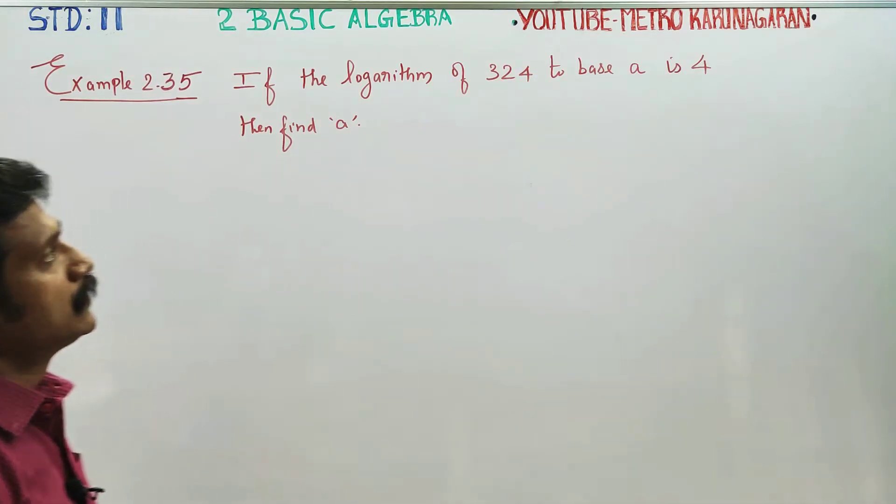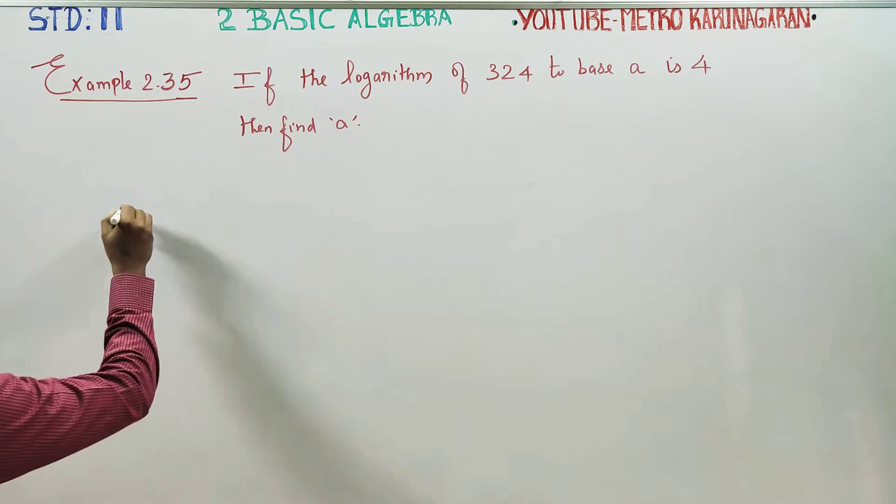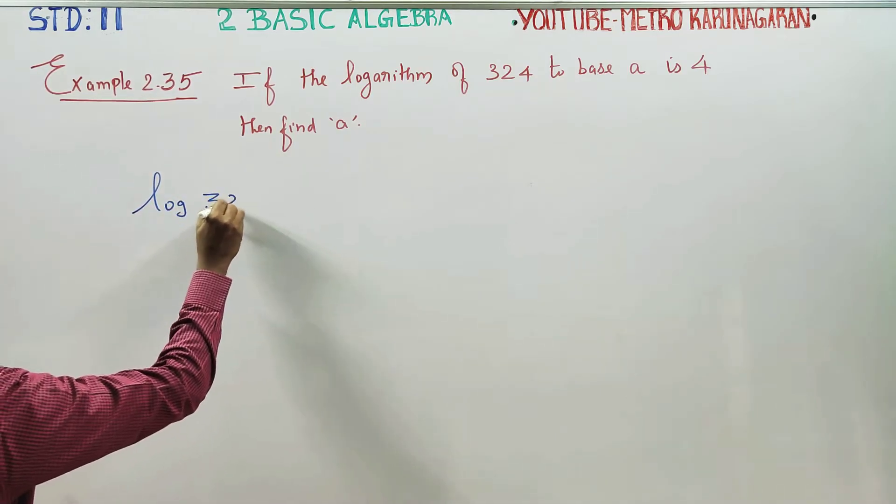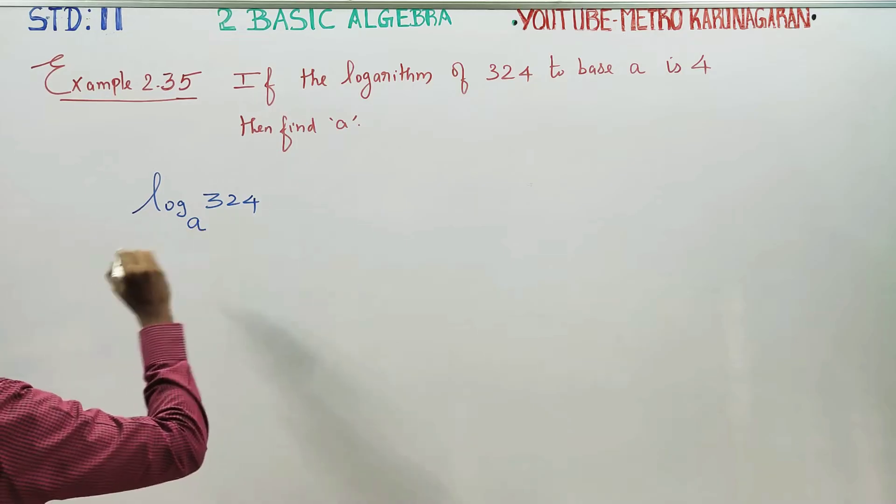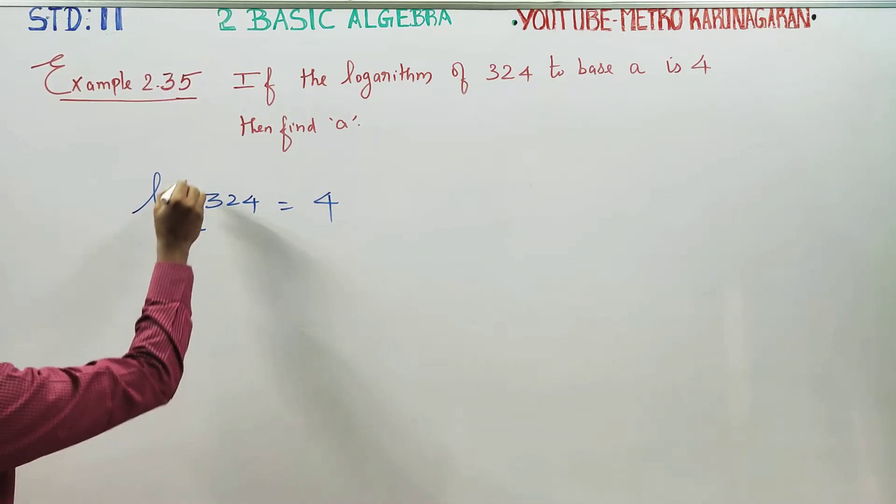If logarithm of 324 to the base A, log 324 to the base A is 4, find the value of A.